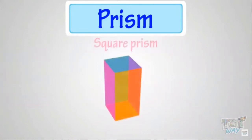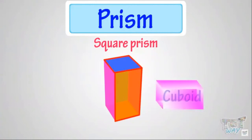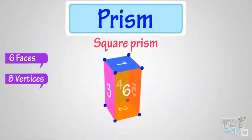Now let's learn another type of prism. This is a square prism because its top and bottom faces are square in shape and all other faces are rectangular. This is the same as a cuboid, so it has six faces, eight vertices, and twelve edges.